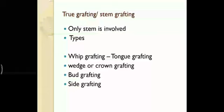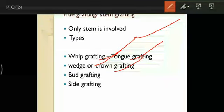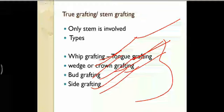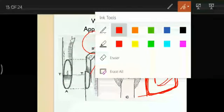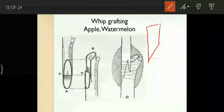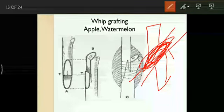True grafting or stem grafting: only the stem is involved. Types include whip or tongue grafting, wedge or crown grafting, bud grafting, and side grafting. In whip or tongue grafting: the stem is cut at a matching angle and the two stems are joined. The diameter of both scion and stock is the same — generally about 1 cm diameter. Example: apple and watermelon.